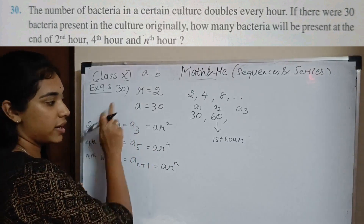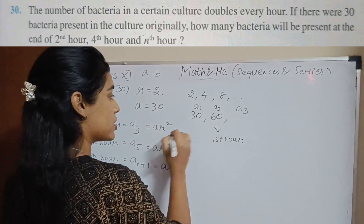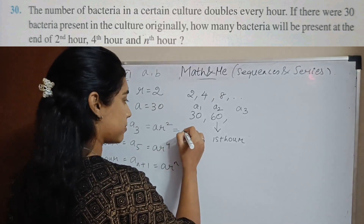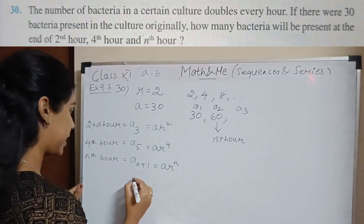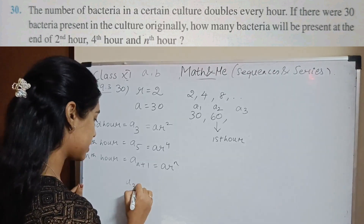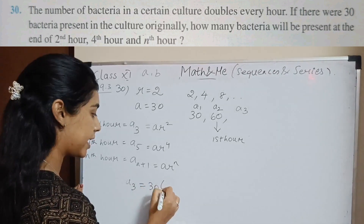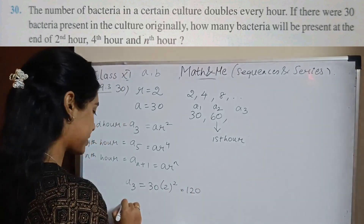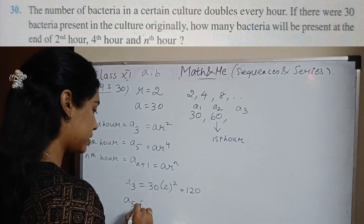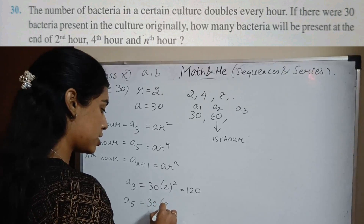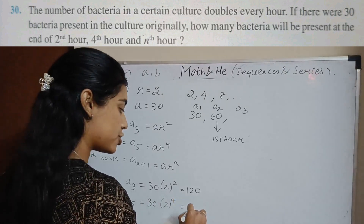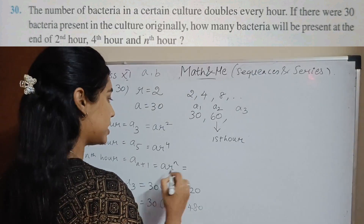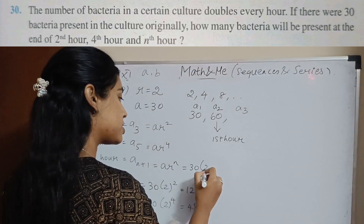Knowing a equals 30 and r equals 2, we substitute directly. a3 equals 30 times 2 squared which is 120. a5 equals 30 times 2 to the power 4 which is 480. And a(n+1) equals 30 times 2 to the power n.